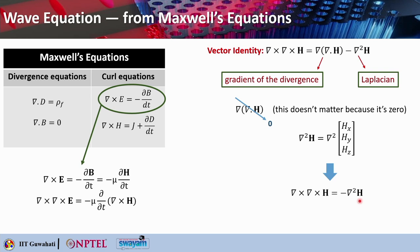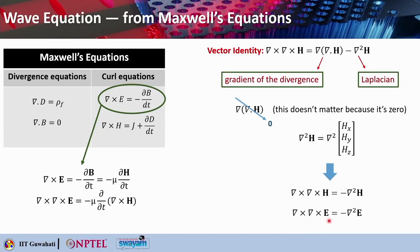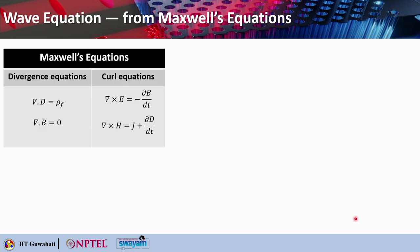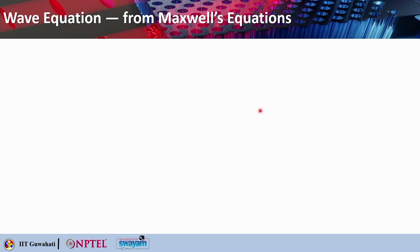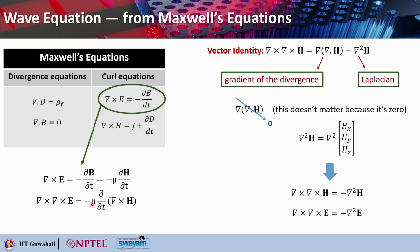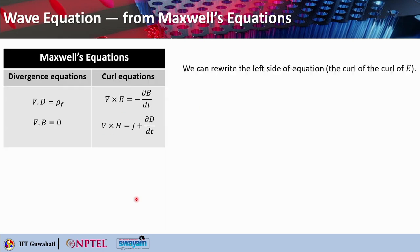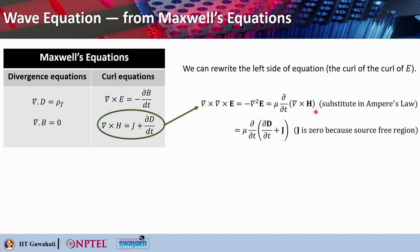This holds for the source-free region where there is no charge or current flowing. Replacing H with the electric field, curl of curl of E equals minus ∇²E. We have obtained curl of curl of E from the previous derivation, and equating those two results gives: curl of curl of E equals minus the Laplacian of E, which equals μ ∂(curl H)/∂t. Curl of H can be replaced by J plus ∂D/∂t. In a source-free region, J equals 0, so only the ∂D/∂t term remains, and D can be written as εE.